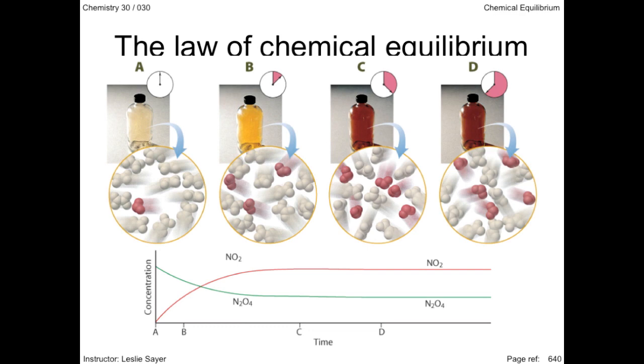Graphically, the concentration of the dinitrogen tetraoxide decreases over time until the equilibrium is established. Likewise, the nitrogen dioxide increases over time until equilibrium is established. At equilibrium, the ratio between the products and the reactants doesn't change.